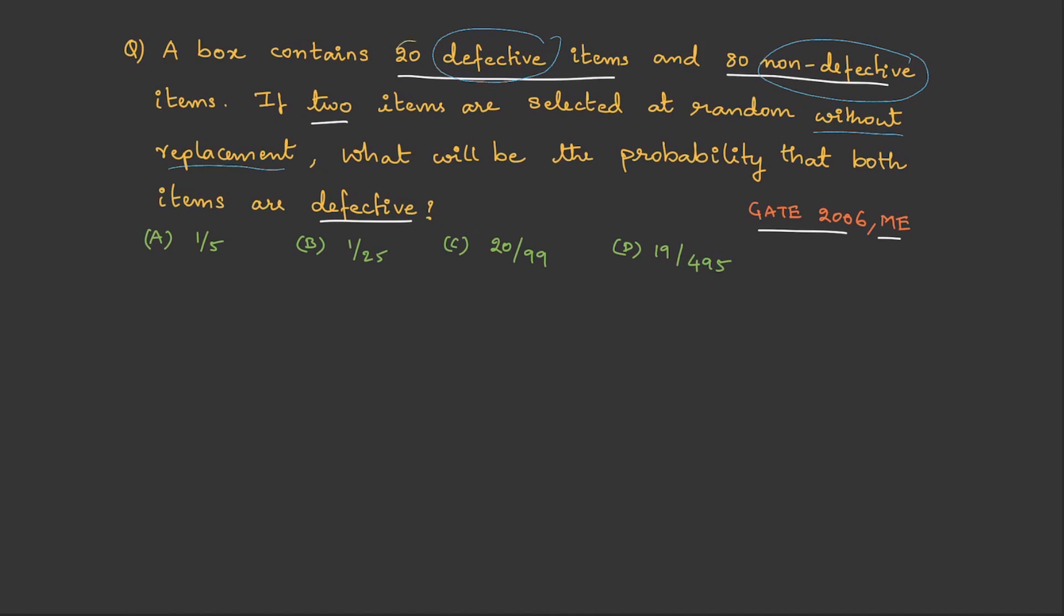So, we have 20 defective and 80 non-defective. Therefore, the number of items is 100. Now, this is distributed into two different categories. One is defective, other is non-defective. So, defective, that is k, is 20 and non-defective, that is n minus k, is 80. Then, they said two items are selected. So, the small n is 2. These are the items which are chosen.